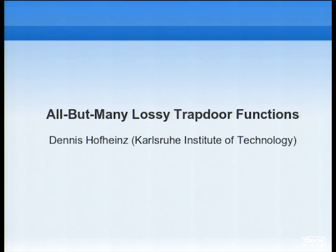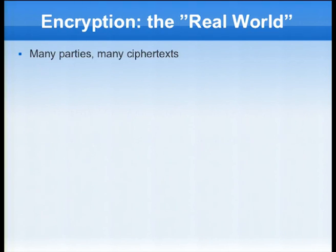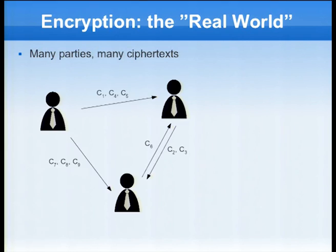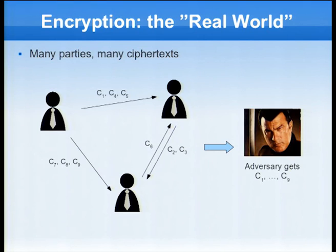Let me start with a bit of motivation for this primitive. In a regular encryption setting in the real world, we usually speak about many parties and we have many ciphertexts. That means we have a bunch of people, each with an individual public key, that may send a bunch of ciphertexts to any other person in the system. So an actual adversary would get a bunch of public keys and also a bunch of ciphertexts.